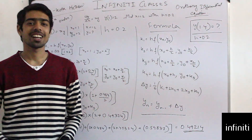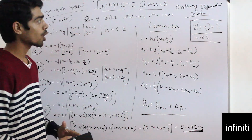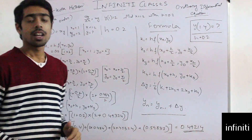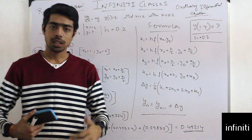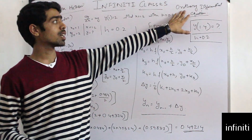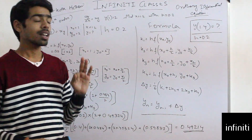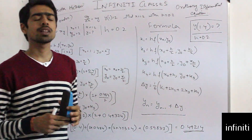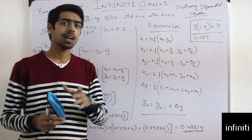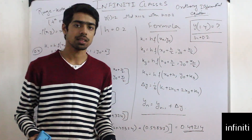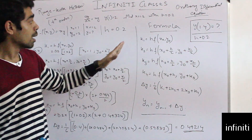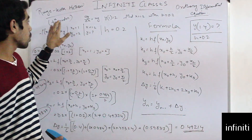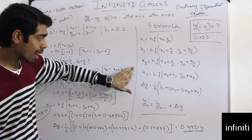Hi everyone, this is Prashant from Infinity Classes. Today we are going to learn a new topic in ordinary differential equations: the Runge-Kutta method. This method comes after Euler's method. Among the three methods we have discussed in ordinary differential equations, this is one of them. It is similar to Euler's method in that we write the formula and put all the values in. It is fourth order and has 4k values.